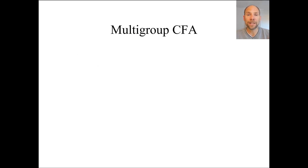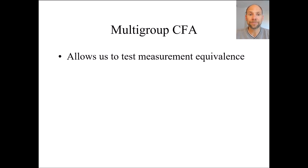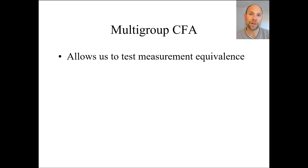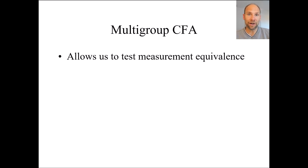I'm going to base this off of multi-group confirmatory factor analysis or CFA, but the same principles also apply to general structural equation models with a structural model and path analysis between latent variables. One key advantage is that confirmatory factor analysis includes a measurement structure where multiple observed variables are used to measure latent variables. Therefore we can test whether the measurement structure with multiple indicators is equivalent across different groups — this is called measurement equivalence testing or measurement invariance testing, two terms used interchangeably in the literature.